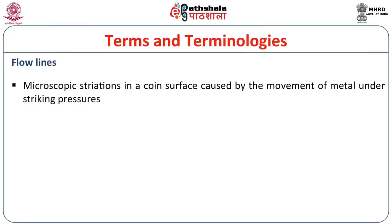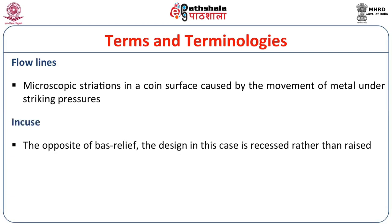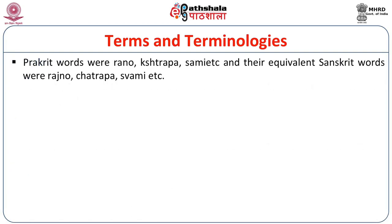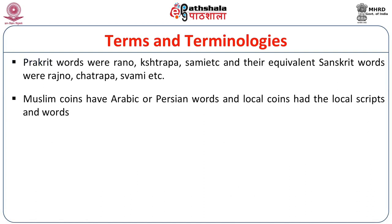Flow lines are microscopic striations on a coin's surface caused by the movement of metal under striking pressures. Intaglio is the opposite of bas-relief — the design is incised rather than raised. Regarding language on coins: Prakrit was used on early Indian coins and later Sanskrit appeared; Prakrit words include Ragnau, Chatrapa, and Swami. Muslim coins used Arabic or Persian, and local coins had local language.